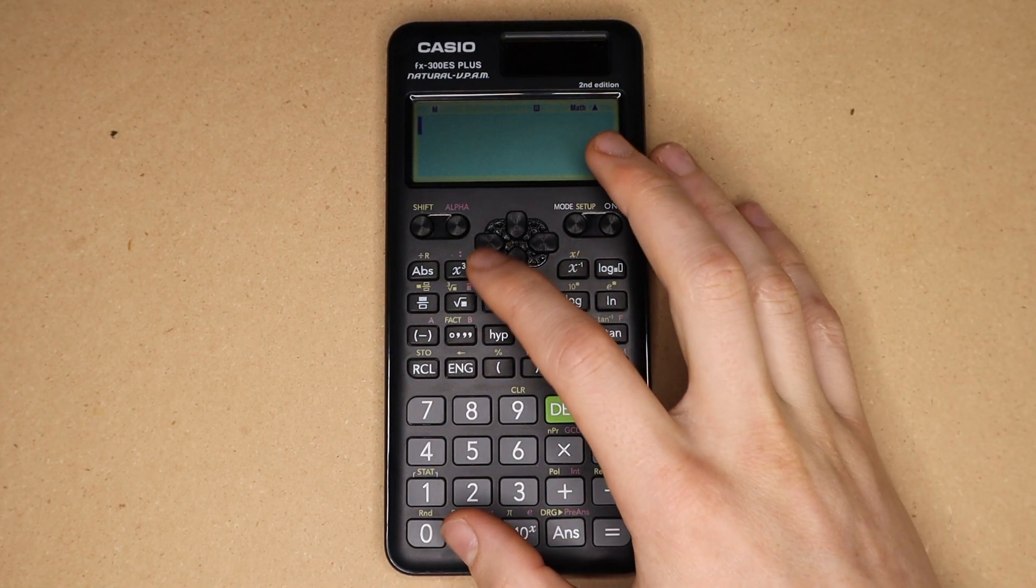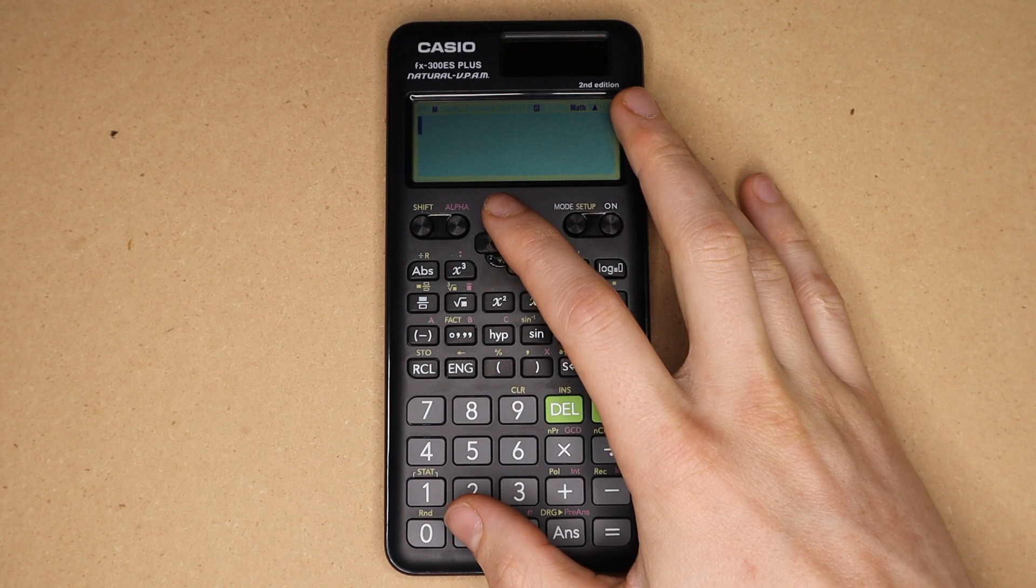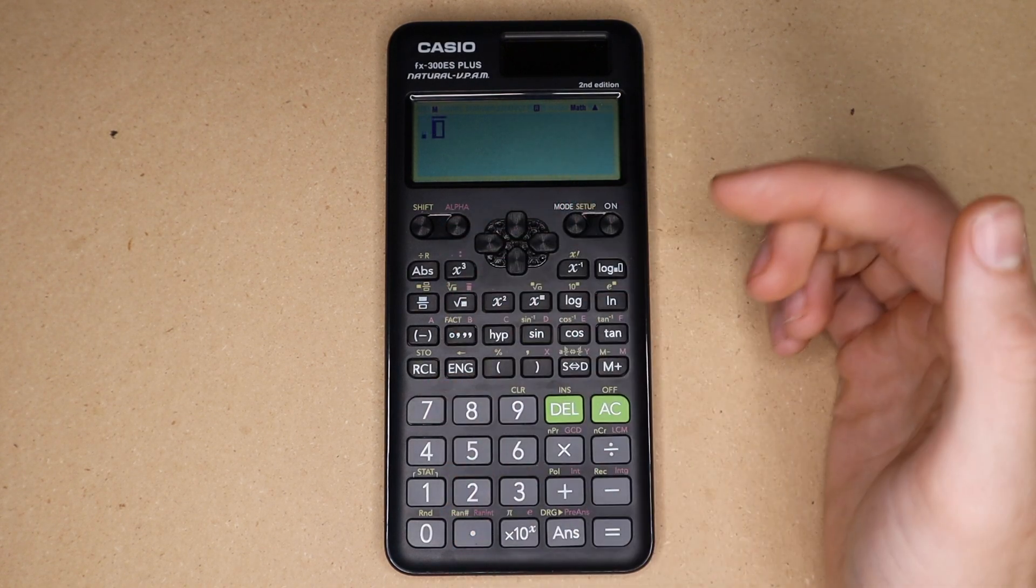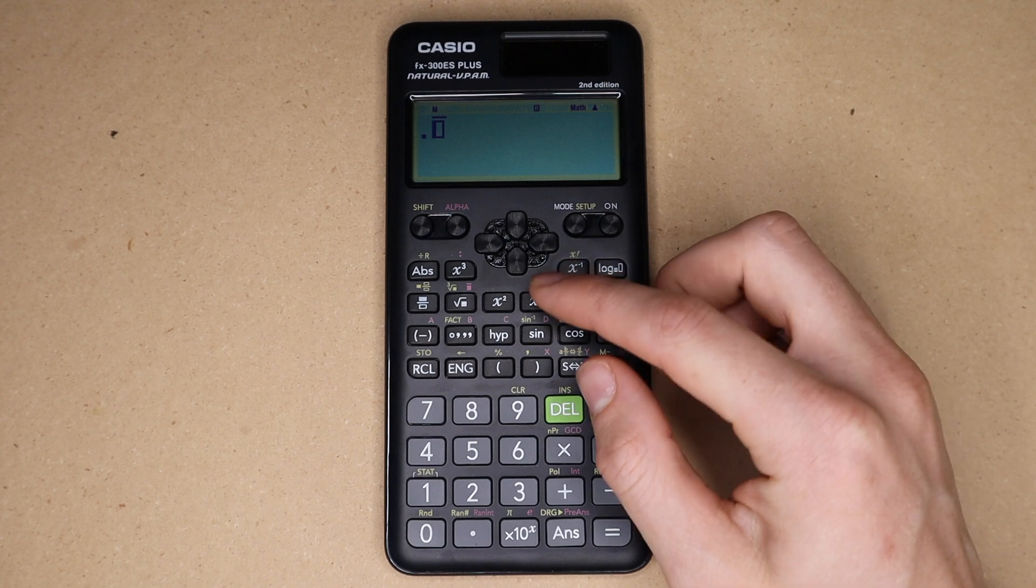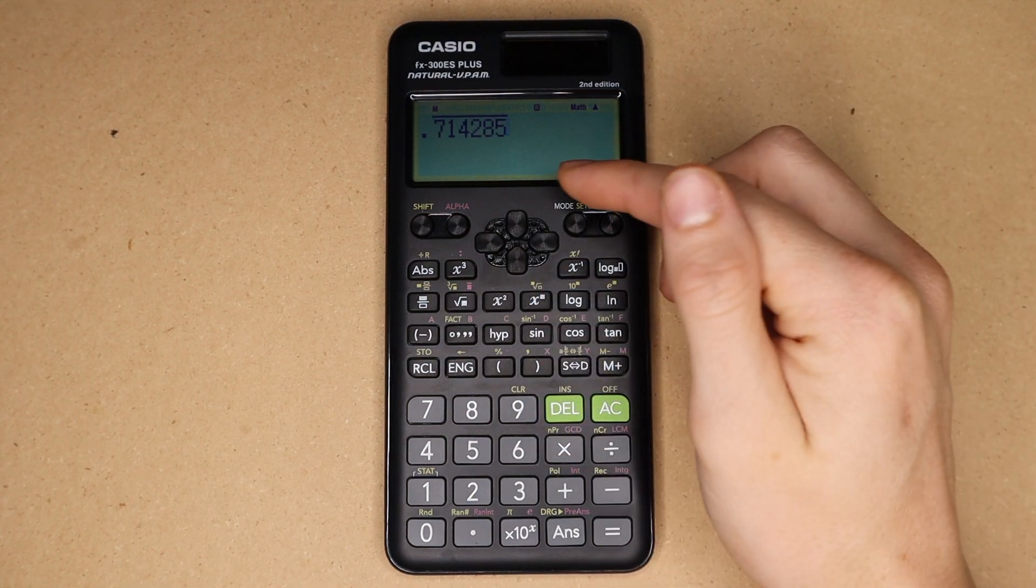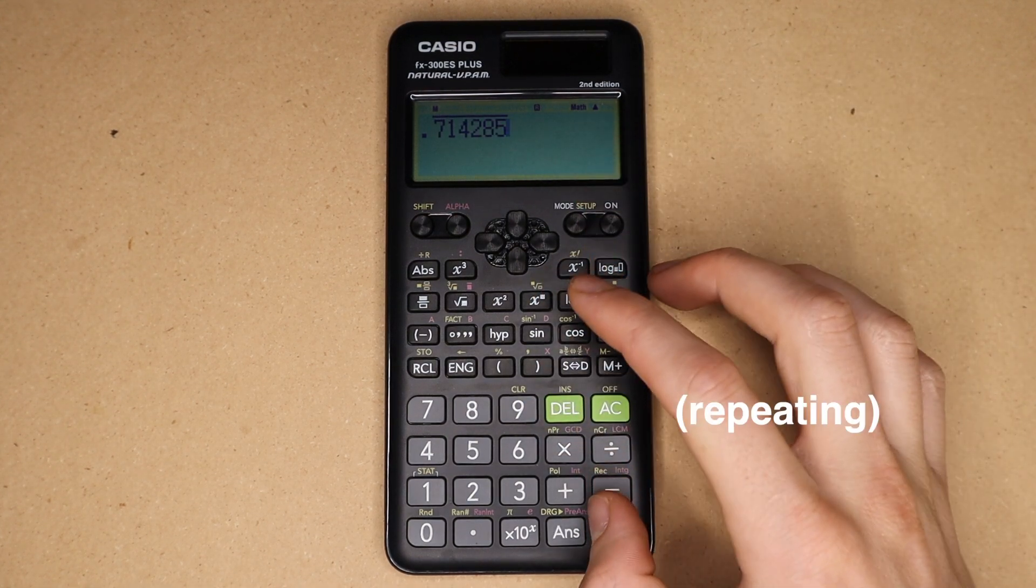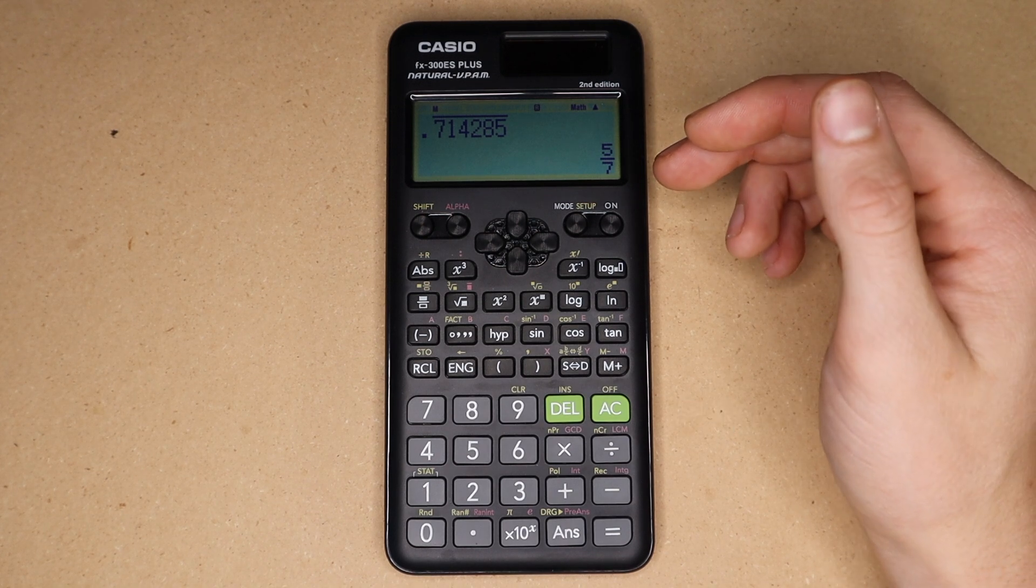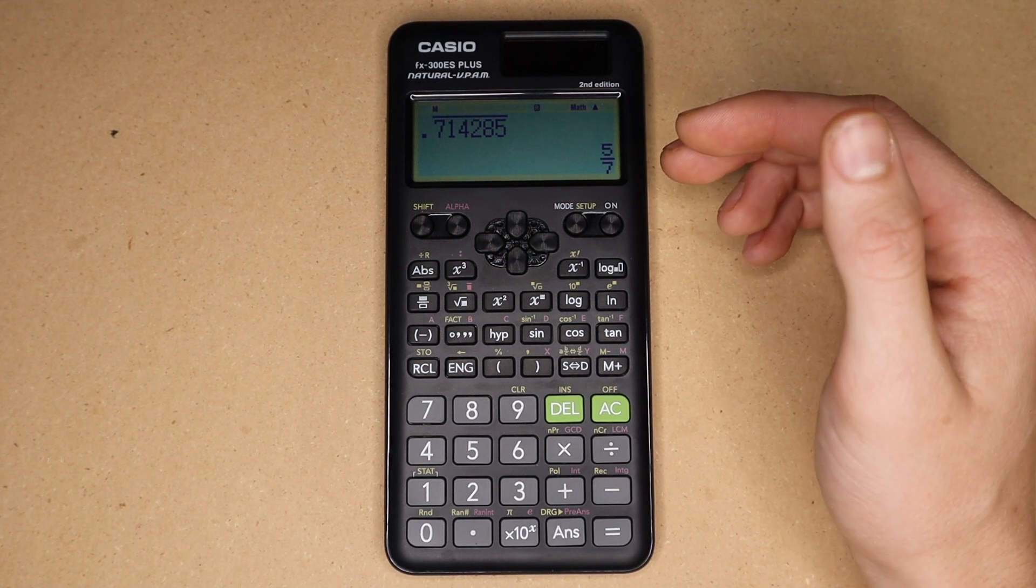So if you do have a decimal that you got from somewhere else and you want to convert that to a fraction, as long as you have enough figures you can press the decimal key and then bring up this template. For example point seven one four two eight five is equivalent to five over seven, so it can make that type of conversion for you.